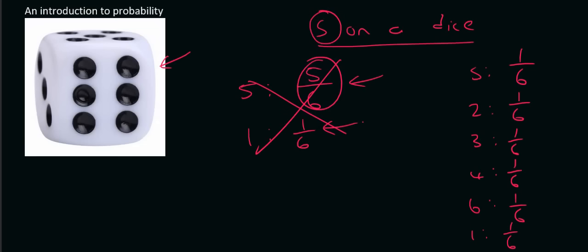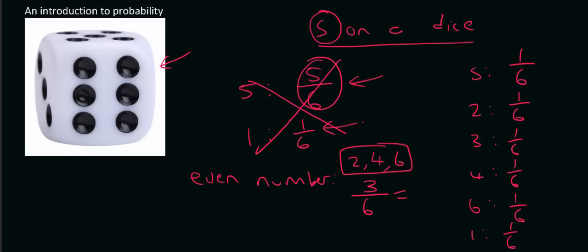What are the chances of rolling an even number? Well, that's the numbers two, four, and six. So how many are there? There's three of them, so that's three out of a total of six. And if you simplify that, that's one out of two.